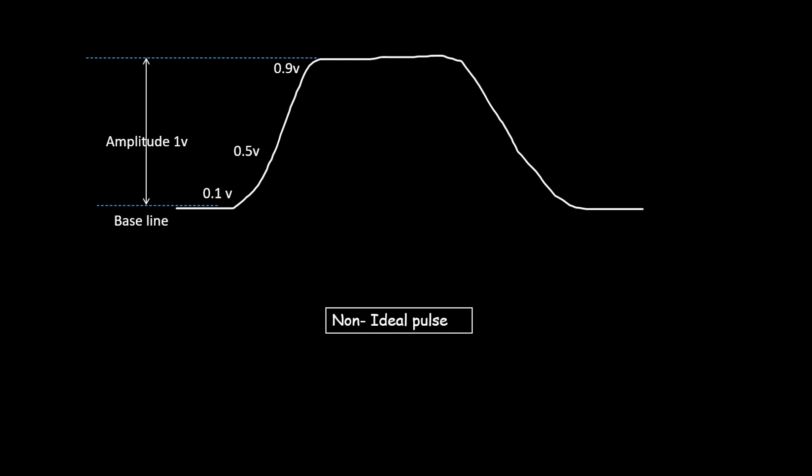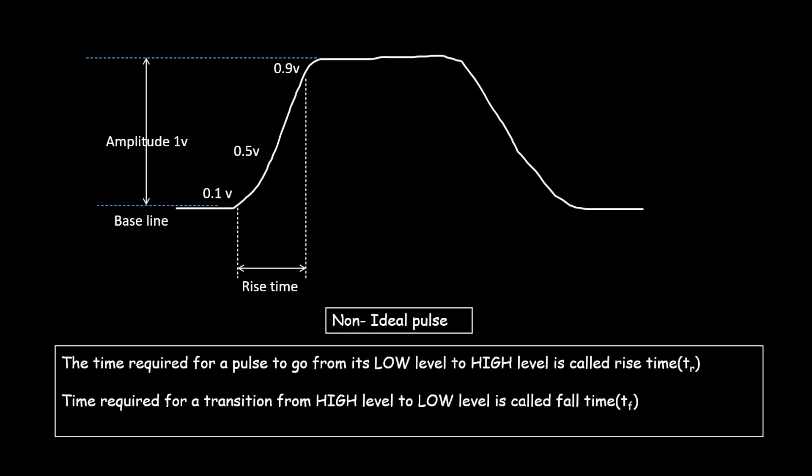The time required for the pulse to go from its low level to its high level is called the rise time, generally represented as TR. The time required for the transition from the high level to low level is called the fall time.